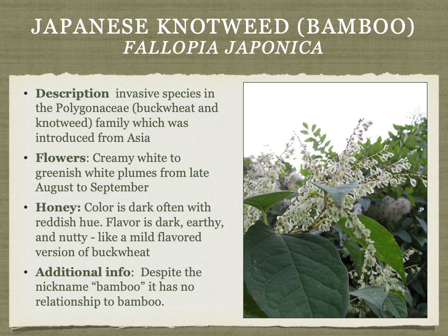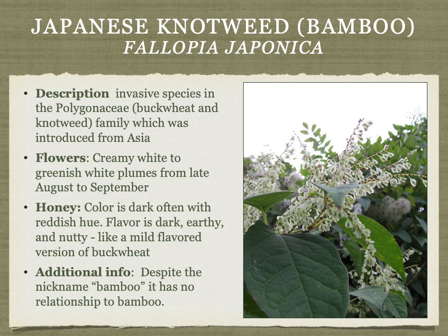Japanese knotweed, sometimes called bamboo honey, is a species related to buckwheat but is an invasive plant. Honeybees prefer it partly because it originates from Europe/Asia as they do. The honey is dark, often with a reddish hue — dark, earthy, and nutty, similar to buckwheat but without the funkiness of eastern buckwheat. Despite the nickname bamboo, it has no relation to true bamboo, which is a grass and would not produce nectar. The name comes from its growth in thick stands with hollow stalks, resembling bamboo.